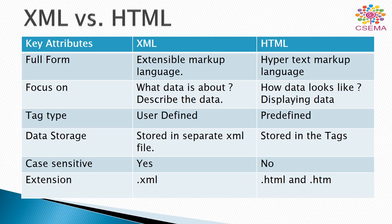Both of them are used to create web pages. XML is focused on what the data is about — it is used to describe the data — while HTML is used to display the data, meaning how data looks when we create web pages using HTML and XML.